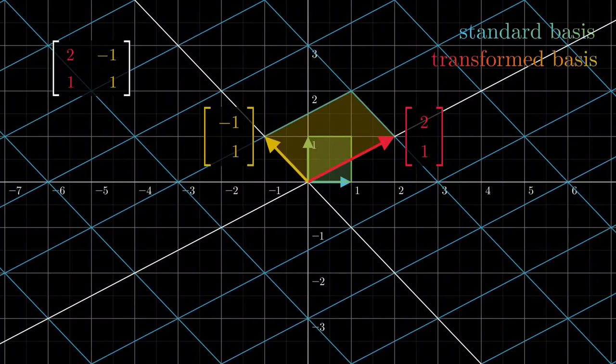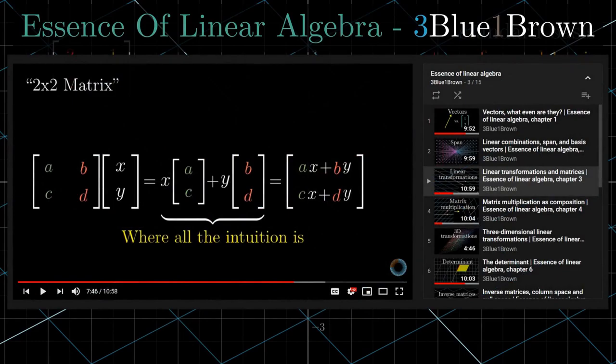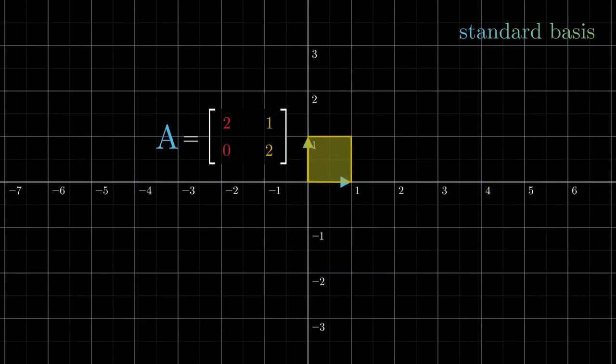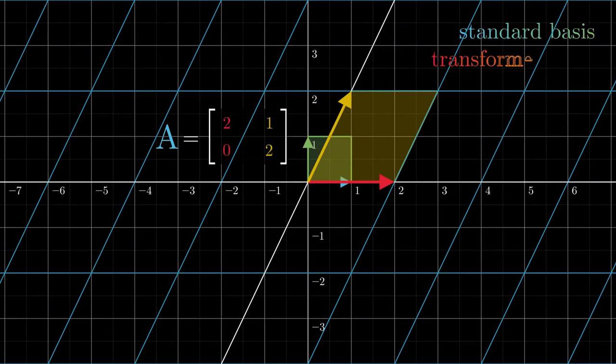I highly recommend you check out the series Essence of Linear Algebra from 3Blue1Brown. To start off, consider a matrix A with columns [2, 0] and [1, 2], which is a way of representing a transformation that takes i-hat over to the coordinates (2, 0) and j-hat over to the coordinates (1, 2).